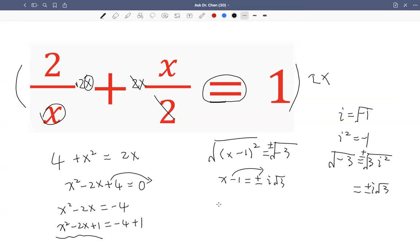Now move this one to the other side. So x has two values: 1 plus i radical 3 and 1 minus i radical 3. So we have two complex solutions. And complex solutions always come in pairs because this is plus minus.